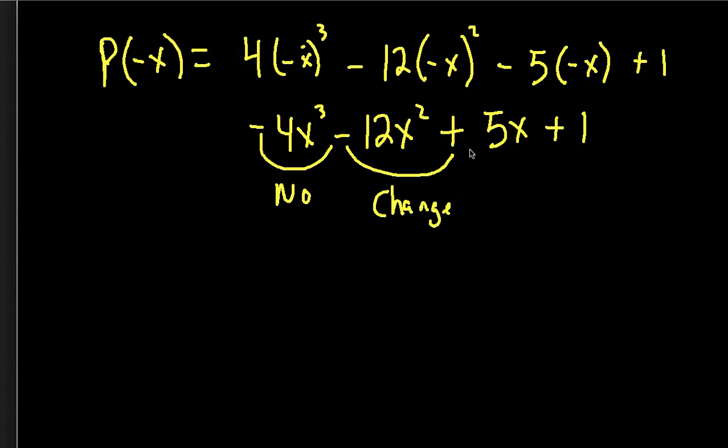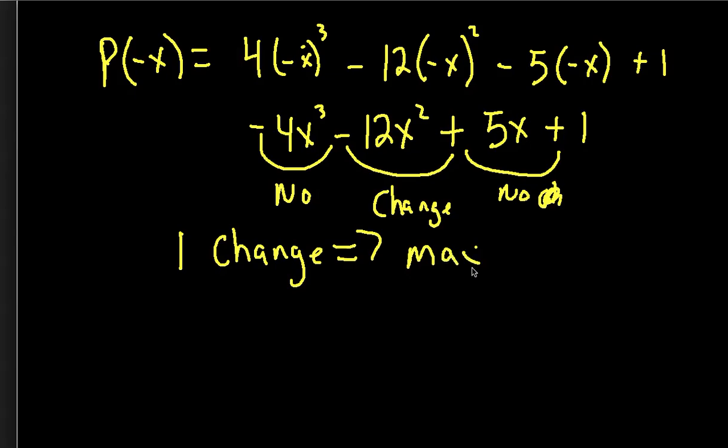And last, we went from positive to positive. There's been no change. So we count the number of changes. We have one change, which means that our maximum negative roots is 1.